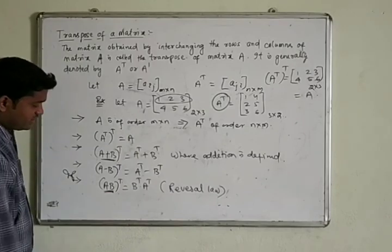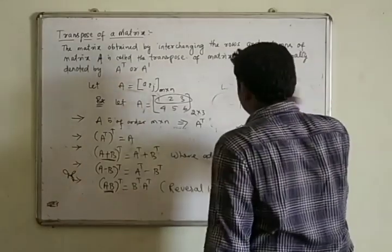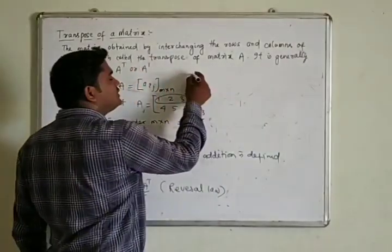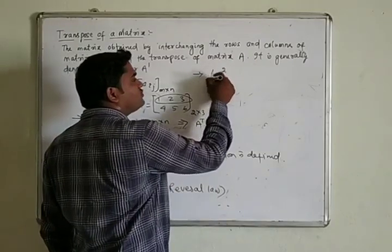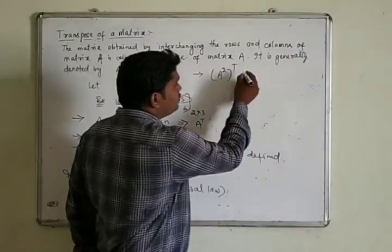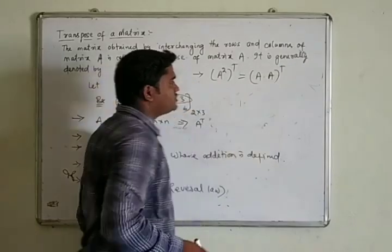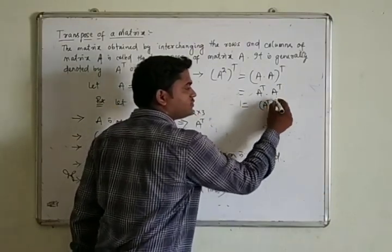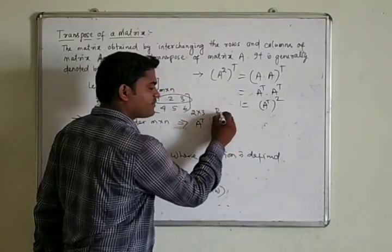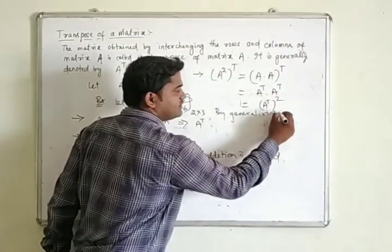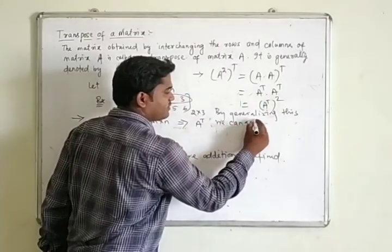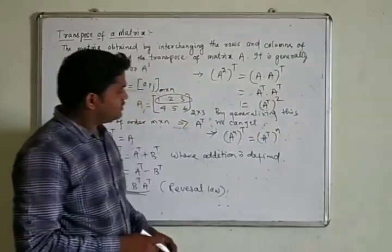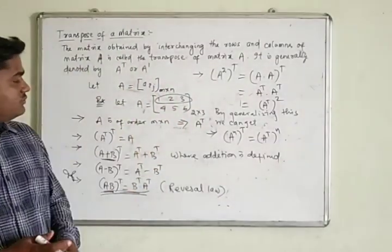We can verify this by taking examples A and B. Also, the transpose of A² can be written as the transpose of (A·A), which by the reversal law becomes A^T · A^T, which equals (A^T)². Generalizing this, we get A^n transposed equals (A^T)^n. This covers all the properties of the transpose of a matrix.